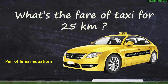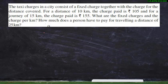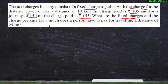Good morning everyone, my name is Locus. Let's join me in solving this problem on pair of equations. The taxi charges in a city consist of a fixed charge together with the charge for the distance covered. For a distance of 10 kilometers the total charge paid is ₹105, and for a journey of 15 kilometers the charge paid is ₹155. What are the fixed charges and the charge per kilometer, and how much does a person have to pay for traveling a distance of 25 kilometers?